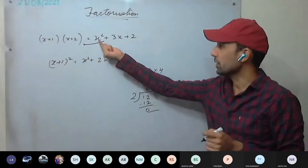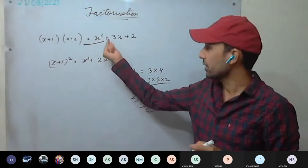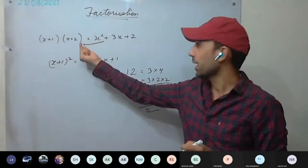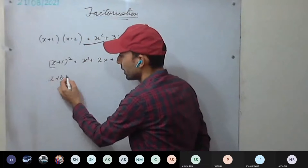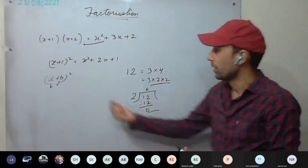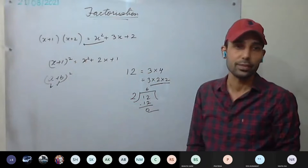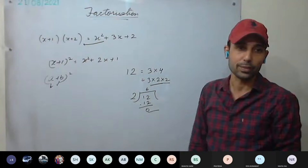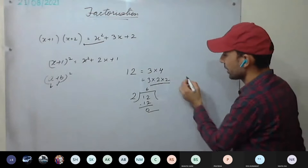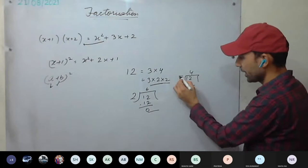Same applies to these expressions. Variables like x, y, a, b denote numbers — x is nothing but a number, its value is varying but it is a number. Whatever we do with numbers, the same applies to expressions or polynomials as well. So 12 can be factorized: if you divide 12 by 3, you get 4 with remainder zero, so we say 3 is a factor of 12.